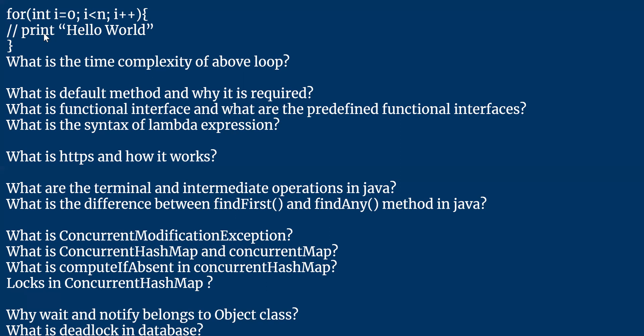Consider an example: key one is already present in the ConcurrentHashMap with a value of 2000. If you run computeIfAbsent with key one and provide the value as 5000, what will be the value of key one when you get it from the map? If key one is already present in the map, you will get the first value, which is already there — so it remains 2000.